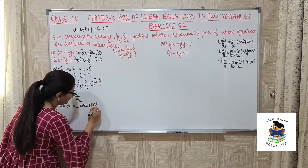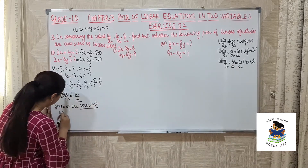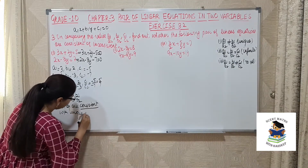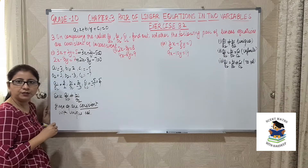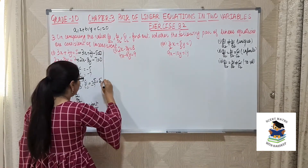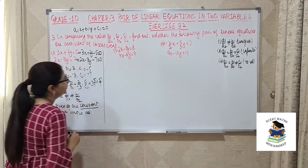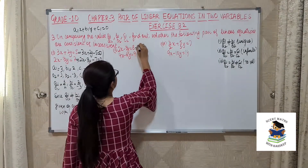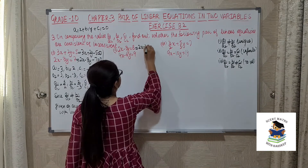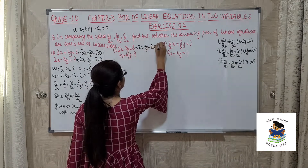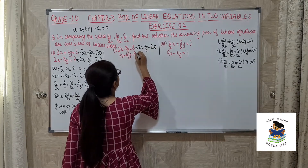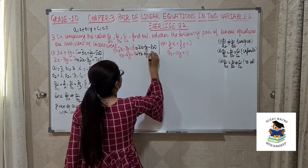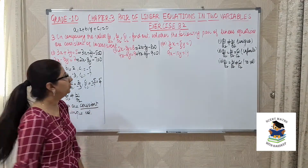You can mention 'with unique solution' since that condition applies here. So this is our first part. Now for the second part, the right-hand side is again not 0, so make it 0 first. This gives us 4x − 6y − 9 = 0.